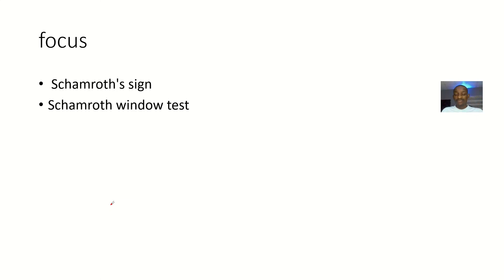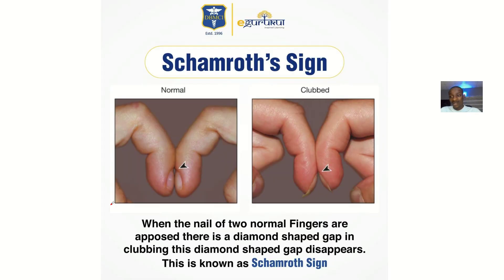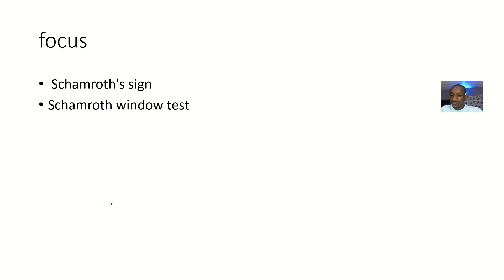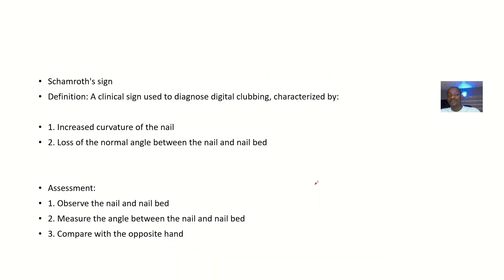In trying to diagnose or test whether a patient has finger clubbing, one of the things you look for — the name of the process used to test for finger clubbing — is known as the Schamroth sign or the Schamroth window test. The window they are talking about is: normally your fingers should be closed with no window, but when the patient puts their fingers together and there's an opening, that's what we call a window.